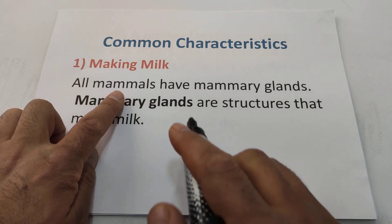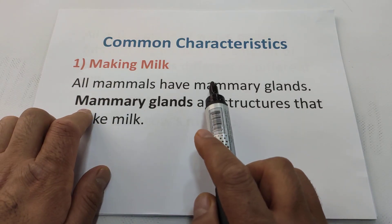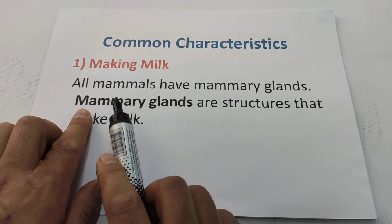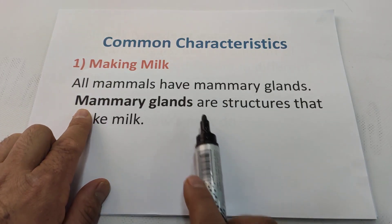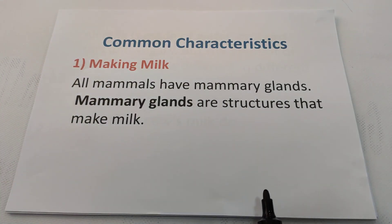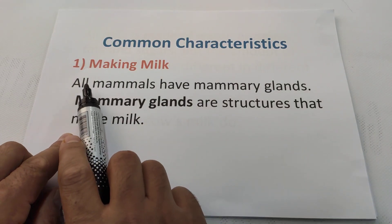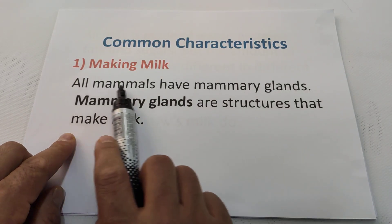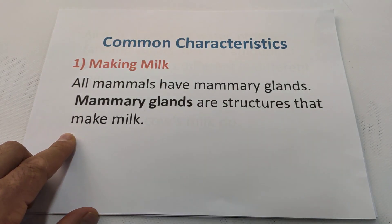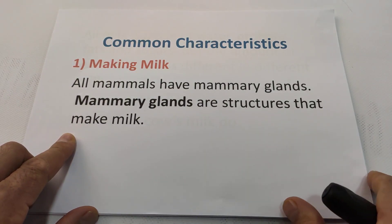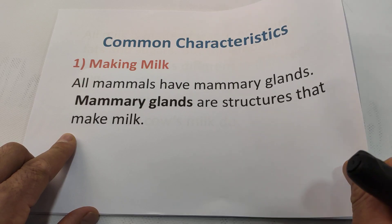All mammals have mammary glands. Mammary glands are structures that make milk. All mammals — meaning female mammals, of course — make milk.